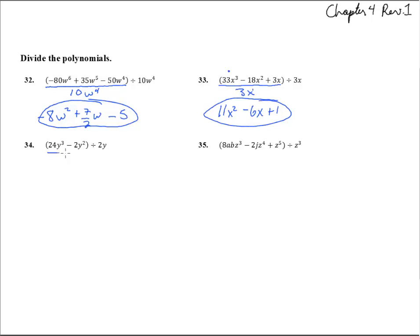Number 34, we're going to divide all these by 2y. If you'd like to think of it as dividing by 2y and dividing by 2y, almost like a distributive property, that's exactly what we're doing. This would be 12y squared, and the 2s will cancel, so we'll just be left with 1y on that one.